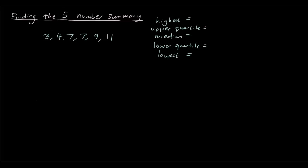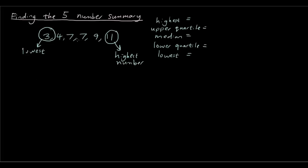So already we can see that three is our smallest number, so that's the lowest number. And eleven is our highest number. So I have already found two of them: eleven is the highest, three is the lowest.